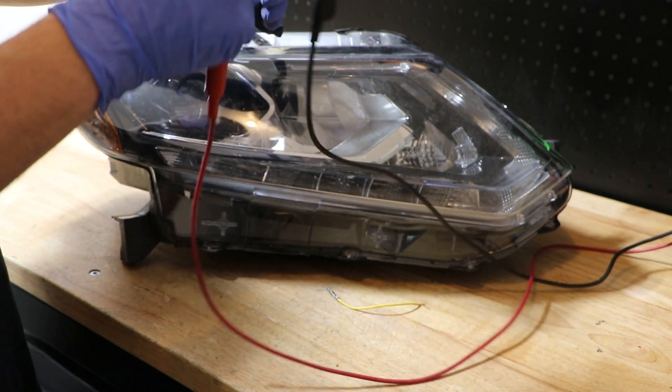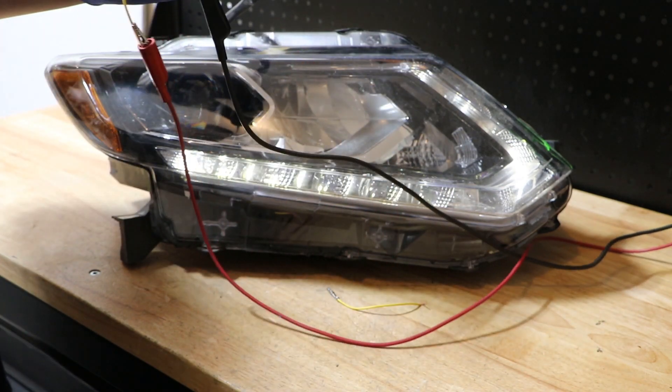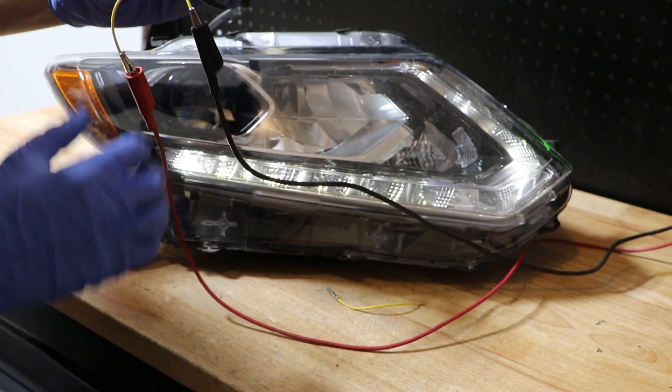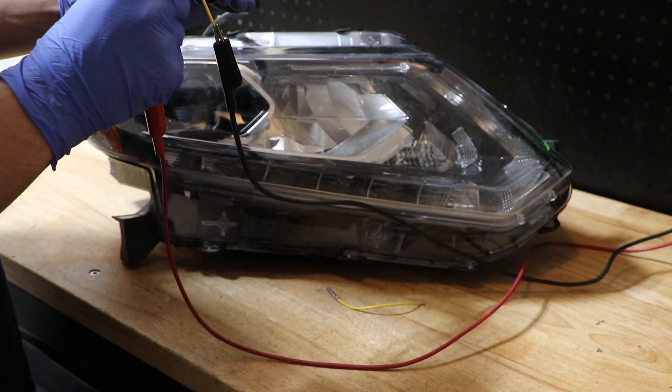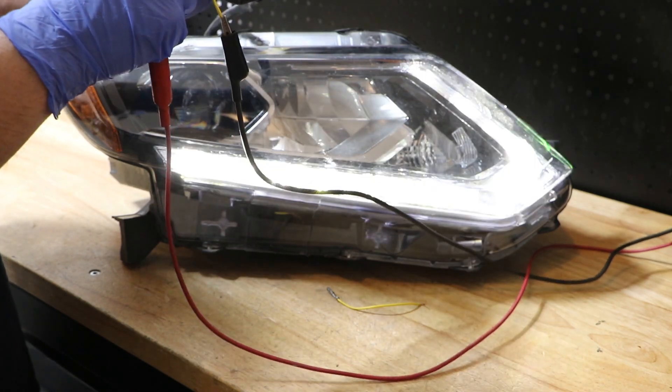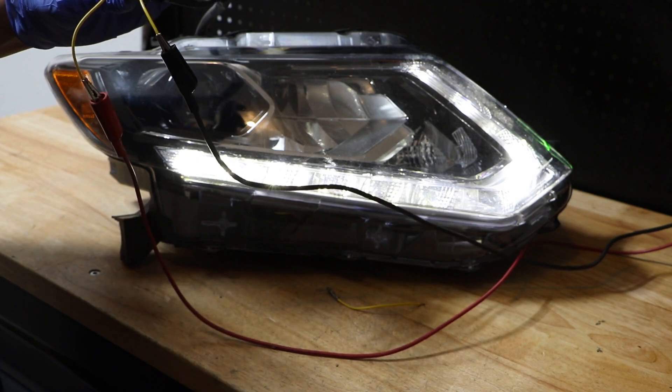Next we will connect the yellow wire, which will turn the DRL low mode on. Then finally we will connect the red wire, and that will turn on the brighter version of the DRL.